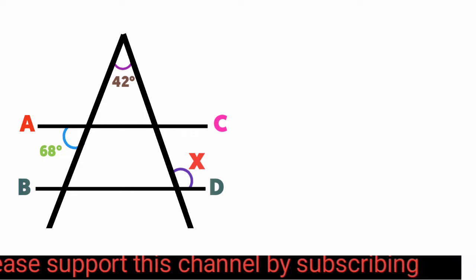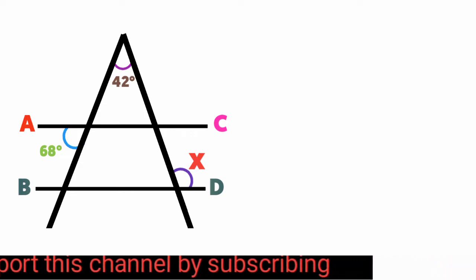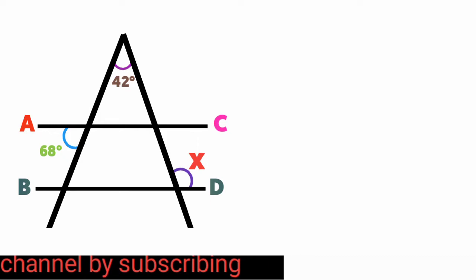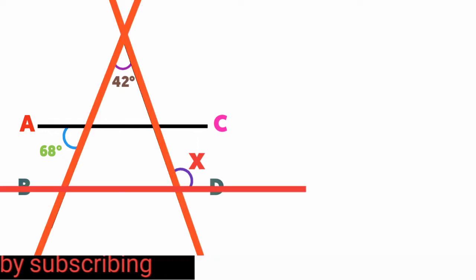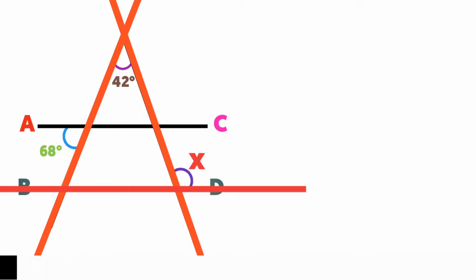Angle X is an exterior angle of this triangle. Recall the rule of the triangle that says the exterior angle of a triangle is equal to the sum of two interior angles that are opposite to it. So that means this angle here is equal to the sum of this angle and this angle here.